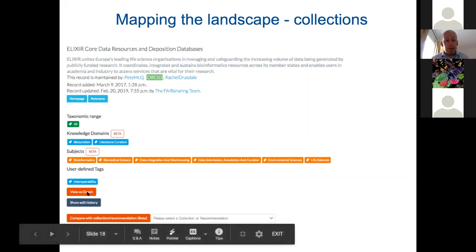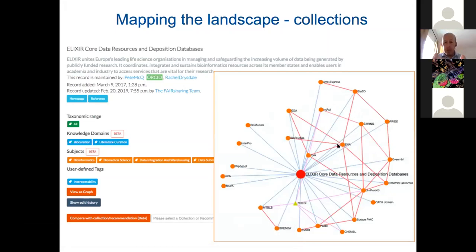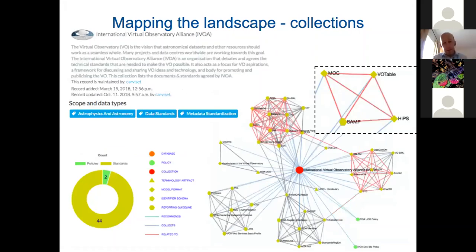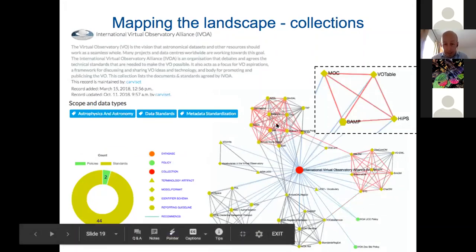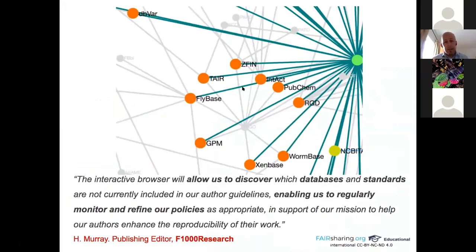Each collection page has handwritten prose, ontology terms you can use to search, and you can compare collections and recommendations — for example, if you're funded by a particular funder and want to publish in a certain journal, you can see the overlap: which standards and repositories should you use? You can also view this as an interactive graph showing all objects in that collection and how they relate to each other — and move one step out to see how they relate to other objects in FAIRsharing.